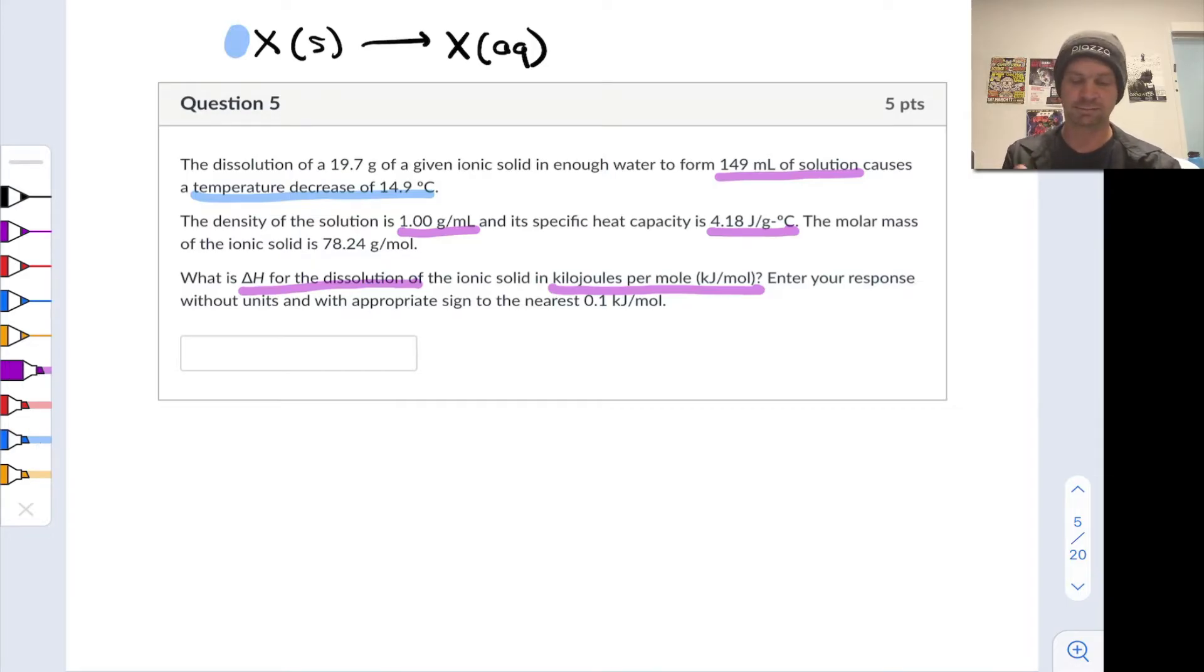I'm going to highlight this temperature decrease of 14.9 degrees C in this 149 milliliters of solution as the solid is dissolved. The last thing we're going to use is the given mass of solid, which will allow us to figure out how many moles of solid we're dealing with along with the given molar mass. So tons of quantities here that you really want to organize and sort through, but thinking carefully about how we proceed through the problem is going to help us.